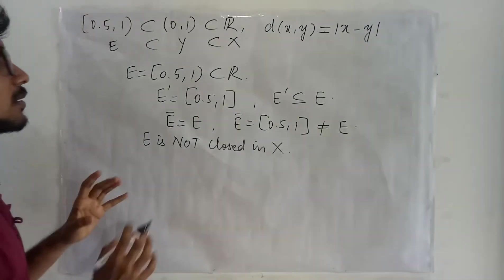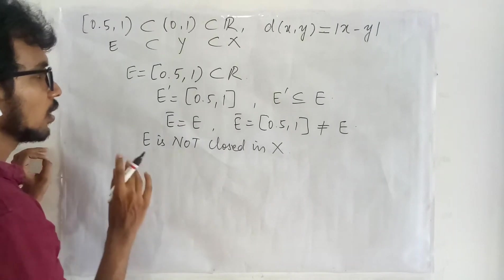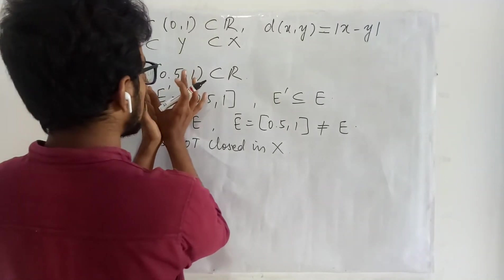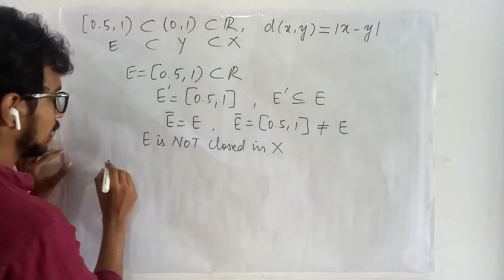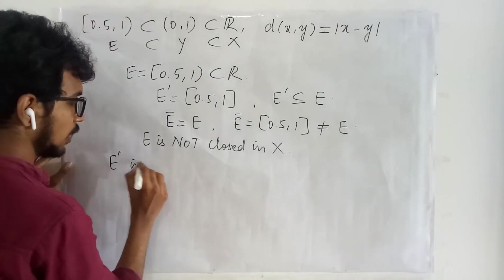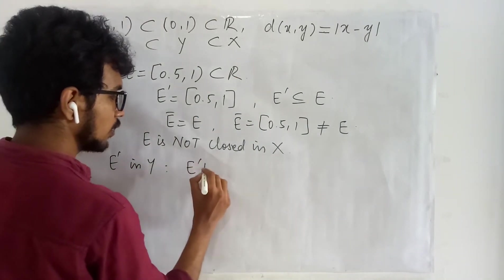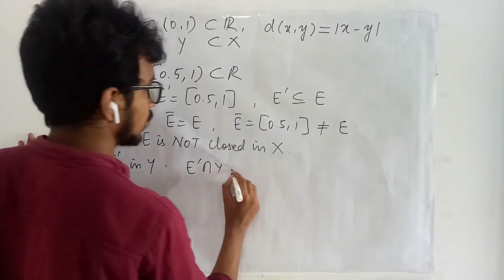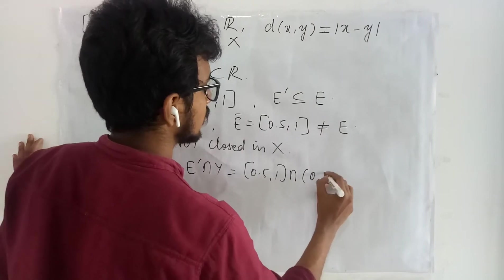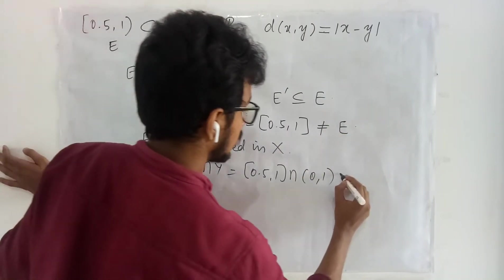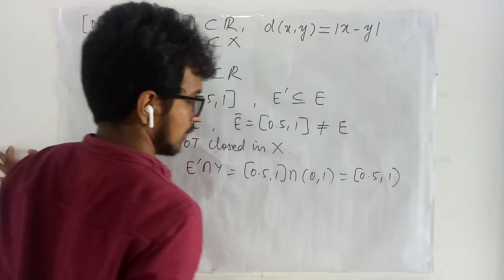Okay let us examine what is happening in Y. So this is my limit set in R. My limit set in Y is going to be what? It is E' intersection with Y, that is [0.5,1) intersection with the segment [0,1], it is going to be closed at 0.5 open at 1.